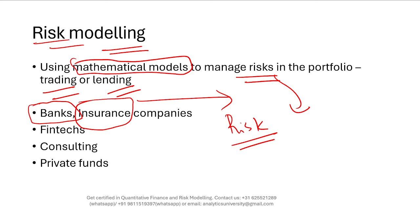Of course there are other areas — for example, in insurance you have pricing model development, which is less related to risk management. For banks, there are also quants who build models for trading or long-term investment purposes. Some models are used for both decision making and risk management, such as a credit model used for capital and provisions. You could also be working in fintechs, consulting firms like the Big Four, or private funds as a risk modeler.